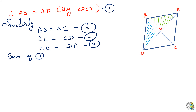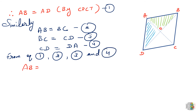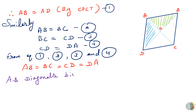BC is equal to CD (equation 3), and CD is equal to DA (equation 4). From equations 1, 2, 3, and 4, we get AB is equal to BC is equal to CD is equal to DA. We have proved that all sides are equal and the diagonals bisect each other at right angles, so ABCD is a rhombus.